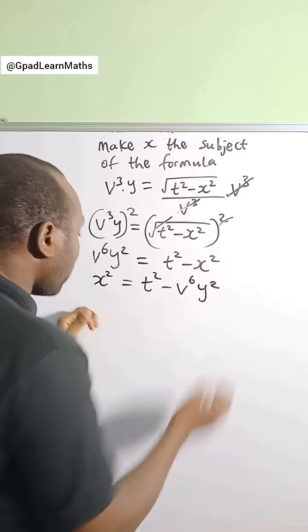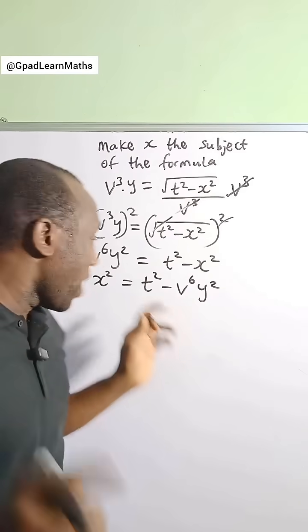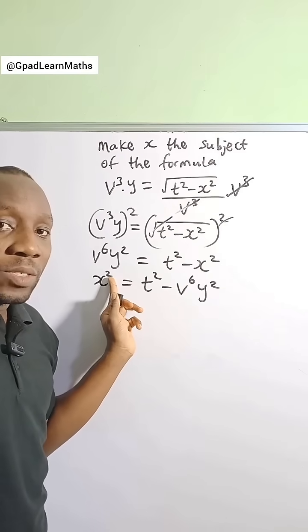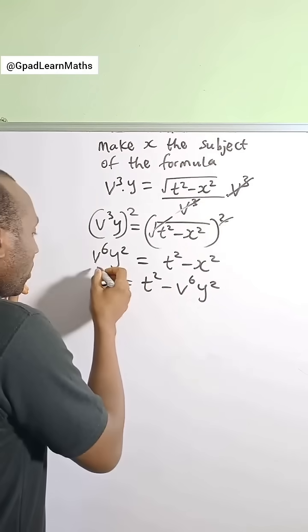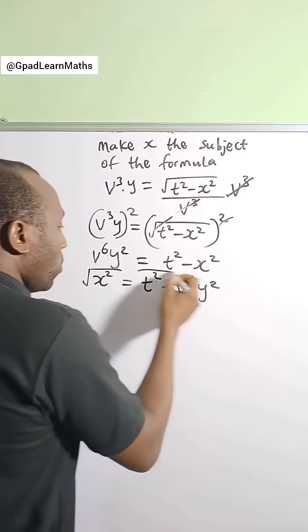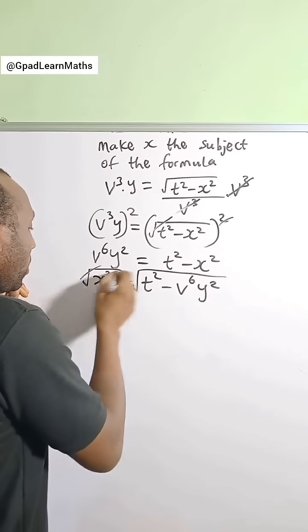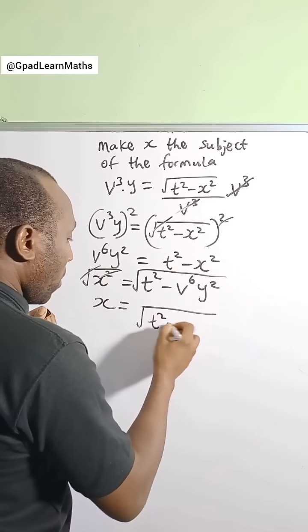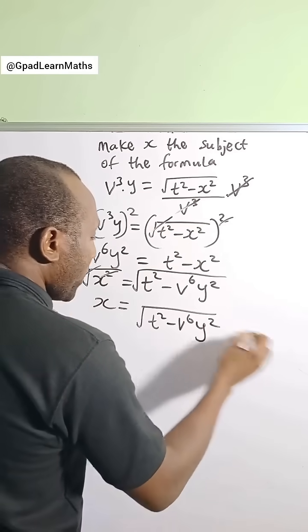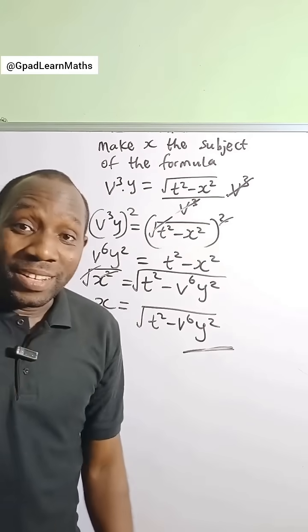Are we done? No, we have squared here which has to be eliminated. What do we do? We square root both sides to get rid of the square. So square root both sides and then x is equal to the square root of t squared minus v raised to power 6 y squared. I'll see you in the next video.